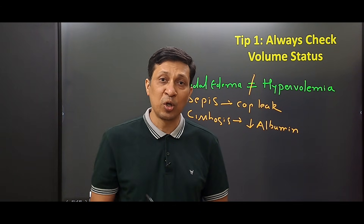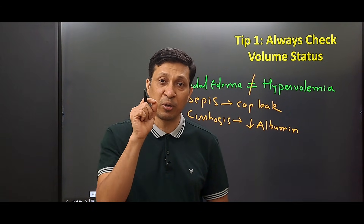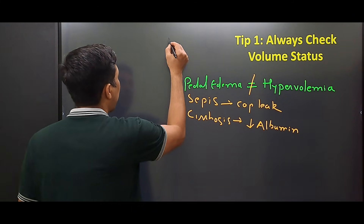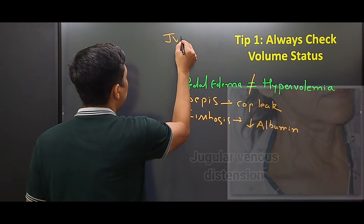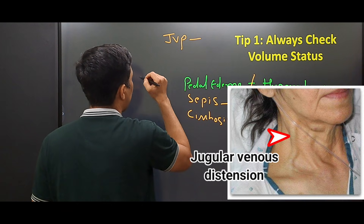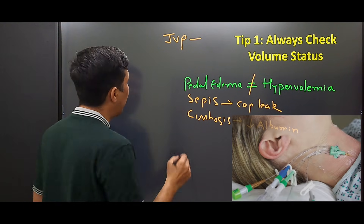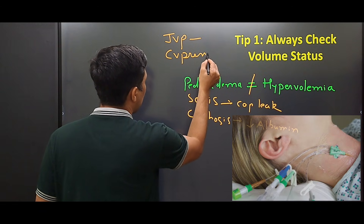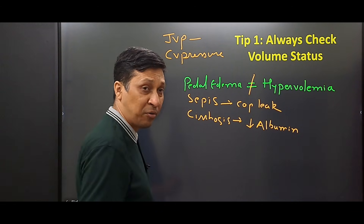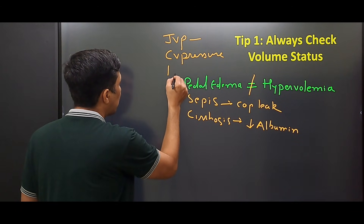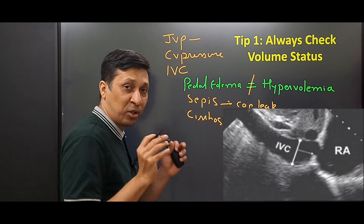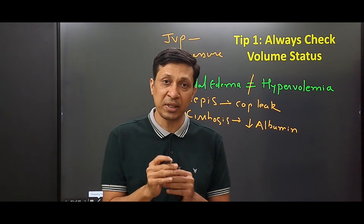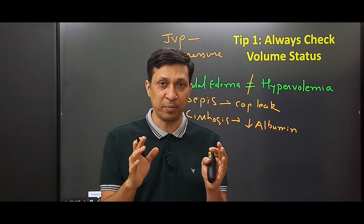The important thing is that in these patients the intravascular volume is low, and if you give furosemide to such a patient they can land up in shock. So before giving furosemide you have to check the volume status. You can check the JVP; if the patient has a central line you can check the central venous pressure; or if you have 2D echo you can check the IVC — and on this basis decide whether to give furosemide or not.